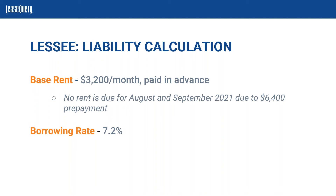When we think about the term, we need to figure out the present value of those payments over that term. Our term is actually 11 months — that first year — and we actually have eight monthly payments made from October to May because of that two-month prepayment. We're going to present value the future payments at today using the borrowing rate. We weren't able to determine the implicit rate as a lessee, so we're using the estimated incremental borrowing rate, which was determined to be 7.2%.